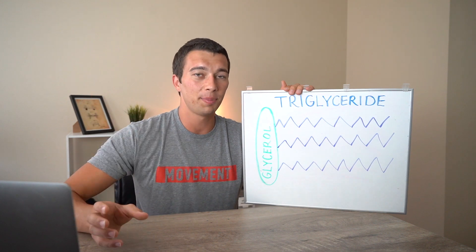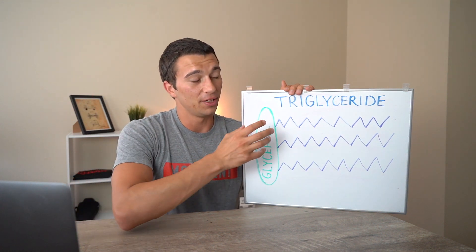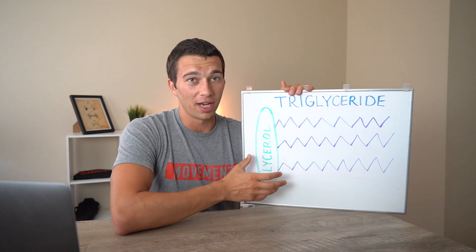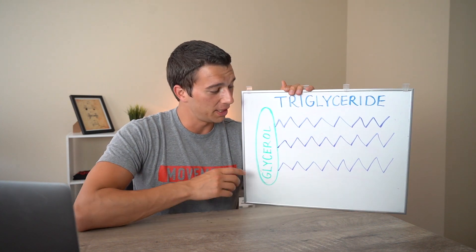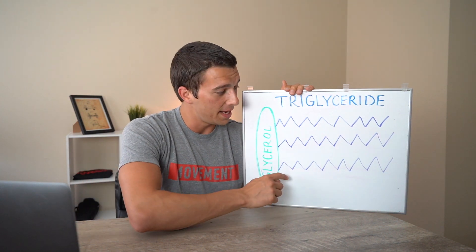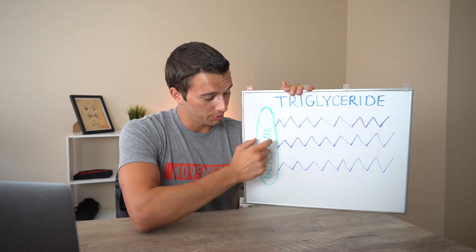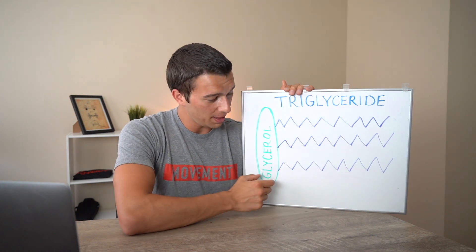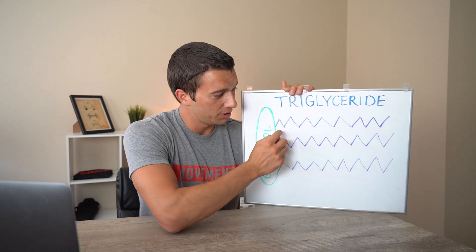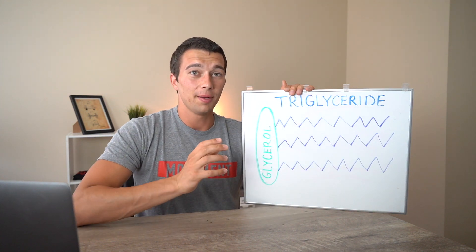Whether you just ate a burger or you're breaking down an adipocyte — a fat cell — we're going to end up at a triglyceride. This triglyceride molecule, to keep it simple, is just a glycerol backbone and some fatty acid chains: a three-carbon glycerol backbone with carbon chains attached here, here, and here.